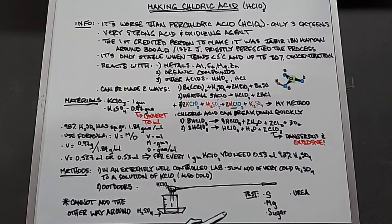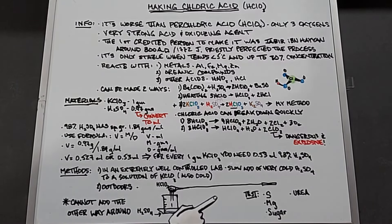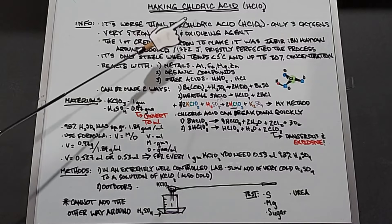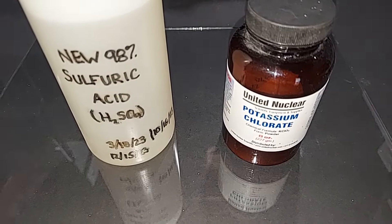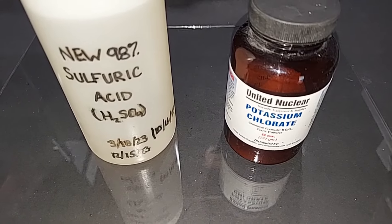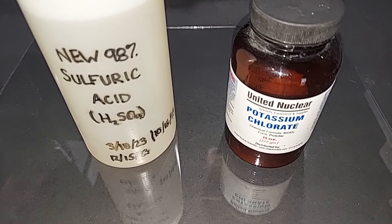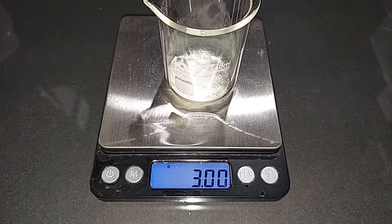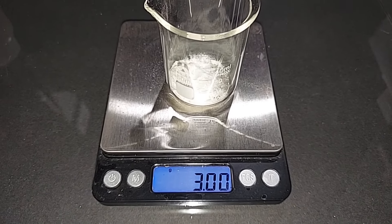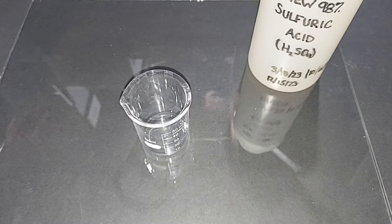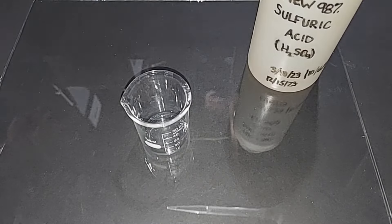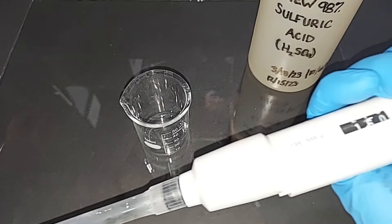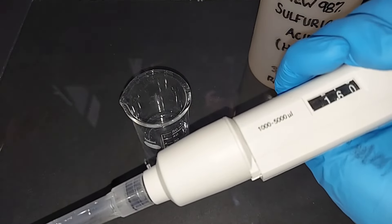This promises to be a really energetic experiment. Let's go ahead and make our chloric acid. As discussed, these are the two things we need: 98% sulfuric acid and potassium chlorate. To start, here is three grams of potassium chlorate pre-weighed, and 0.53 times three is 1.59, I've got this at 1.6, close enough.